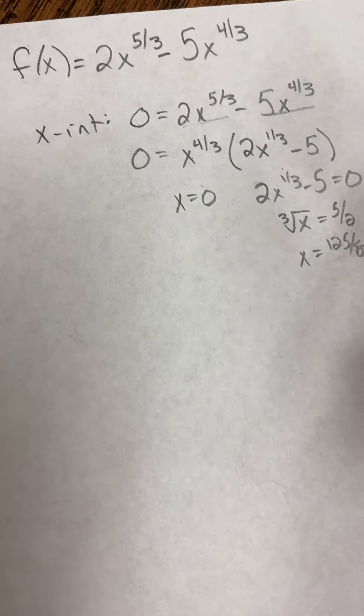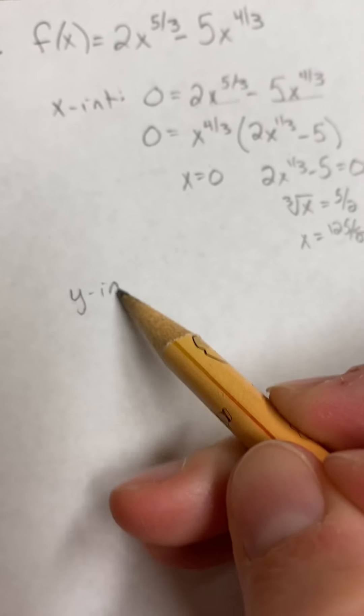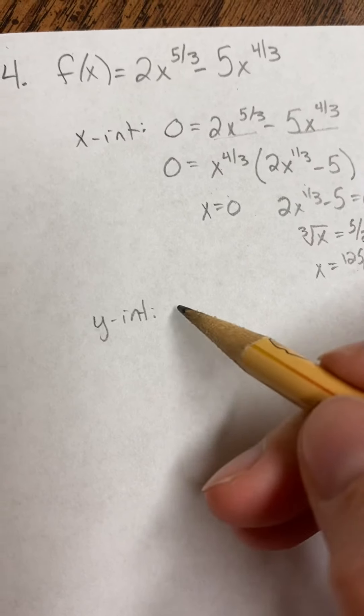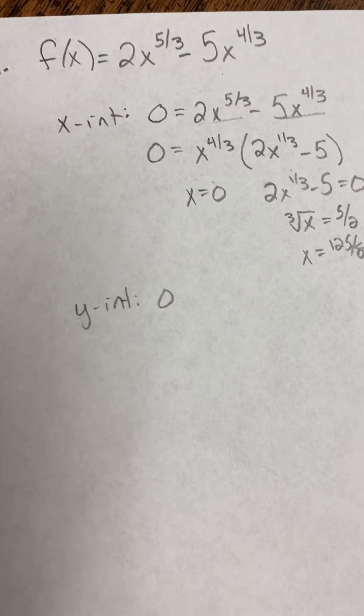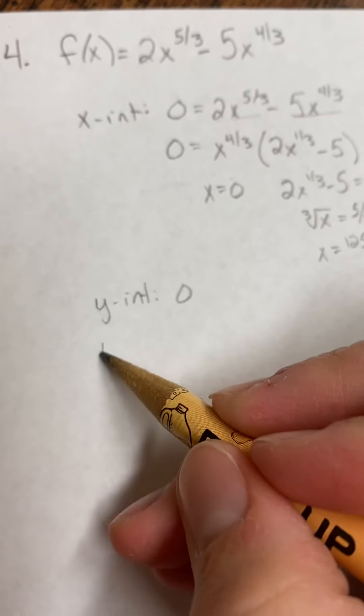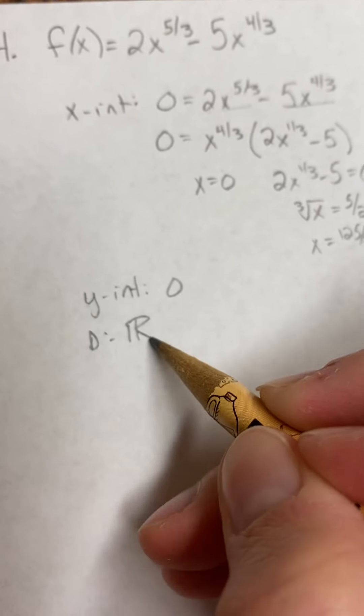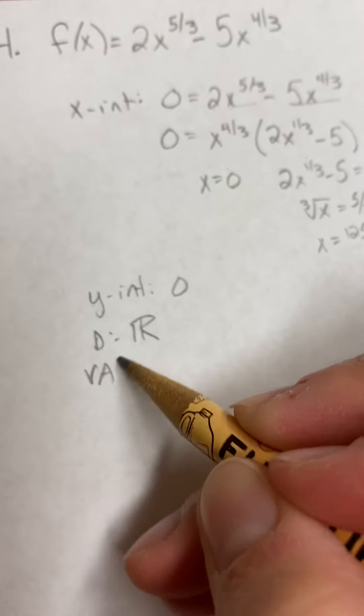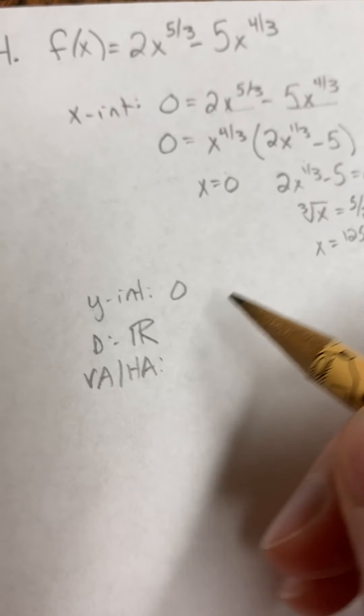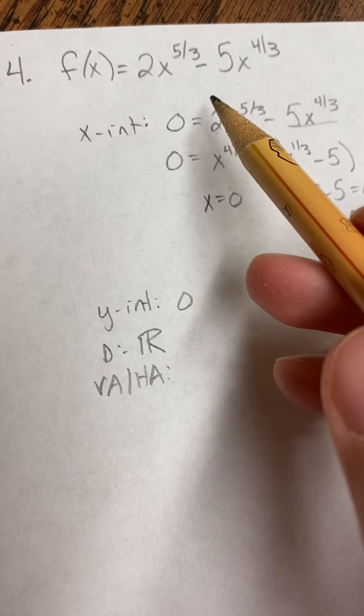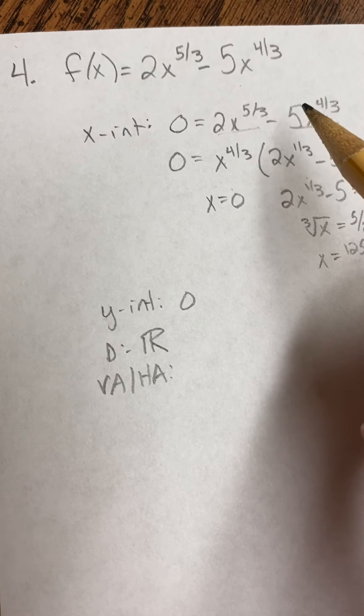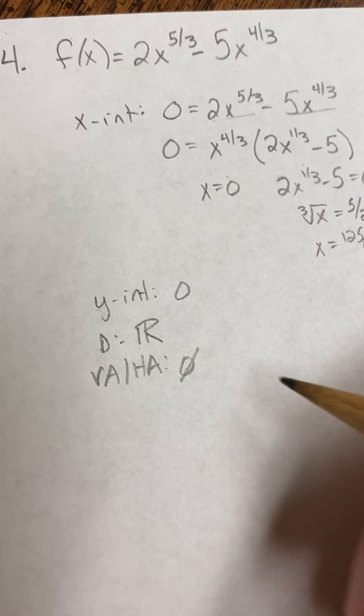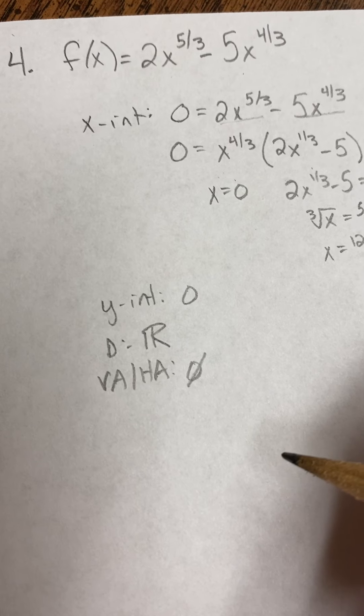Now, to find y-intercepts, you're going to plug in zero for x, and when you do that, you're just going to get zero. But we've already got that point listed. All right. Our domain is all real numbers. We can plug in whatever we want there. Now, vertical and horizontal asymptotes. This is not a rational function where we have like a polynomial in the numerator and denominator. This is totally different. So we don't have any horizontal or vertical asymptotes in this one.